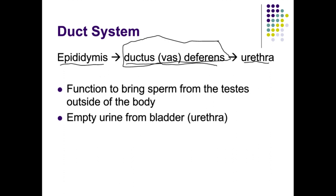If a man were to get a vasectomy, the vas deferens would be cut and tied off. When a male gets a vasectomy, they are not getting their testes removed — they are having the vas deferens cut. 'Vas' refers to the vas deferens, and 'ectomy' means cut. The function of the duct system is to bring sperm from the testes to the outside of the body.